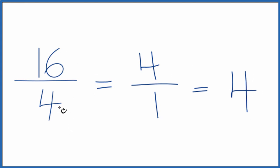So 16 fourths equals 4 over 1, and it equals 4. And all of these are equivalent.